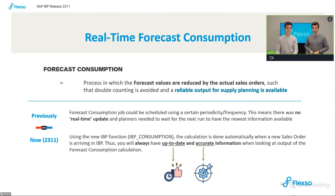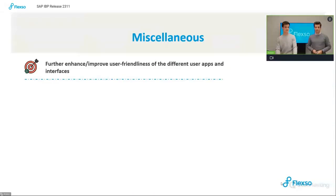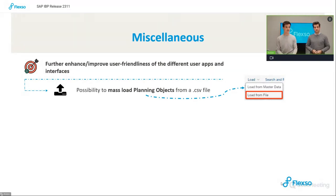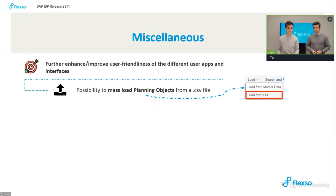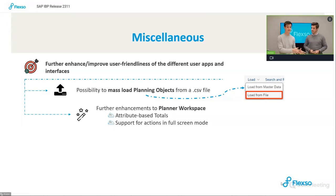Let's move on to the final topic: a bundle of miscellaneous improvements. First, you can now load planning objects via a file — previously this had to be done within the Manage Planning Objects app, so this is definitely a useful improvement. Next, the Planner Workspace received several enhancements. Two highlights are attribute-based totals, which were already available in the Excel UI and are now also coming to the Planner Workspace, and an improved full screen mode.